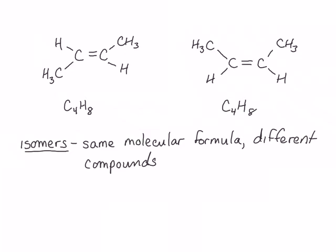The compound on the left that has the two CH3 groups on different sides of the double bond is called the trans isomer. The molecule on the right that has the two CH3 groups on the same side of the double bond is called the cis isomer.